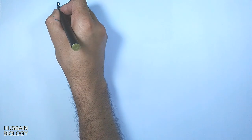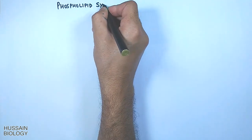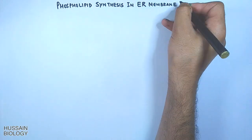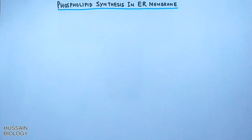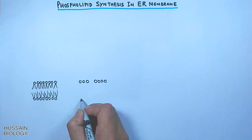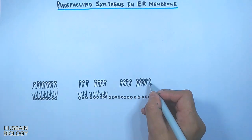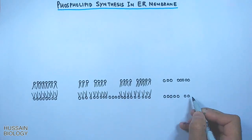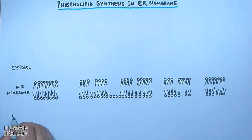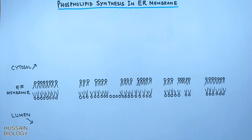In this video we will be discussing phospholipid synthesis in the endoplasmic reticulum membrane. Here in this diagram we have the ER membrane — the upper side is the cytosol and the lower one is the lumen side.